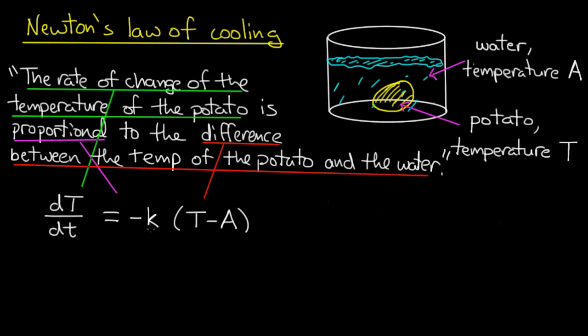Now I write equals minus k for my constant of proportionality because I want to take k to be positive. Now think for a moment about the physical correctness of the sign here. If the temperature of the potato is greater than the temperature of the water, then T minus A is positive. And I would want dT, the temperature, to be going down. So I would want this, what's on the left hand side, to be negative. So that would mean that this constant should be negative. So as long as I take k greater than 0, I insert a minus sign here.